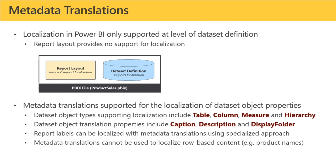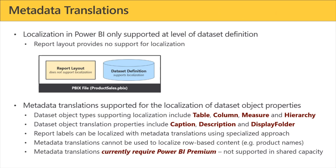First we'll work with metadata translations, which change the names of your tables and fields. We can use them to change labels and text, but they can't be used to change row-based content — product names cannot be localized this way, so we may need a content localization strategy. Going down this road today requires loading everything into a workspace that has a diamond — whether Power BI Premium or Power BI Embedded — because metadata translations simply do not work in shared capacity.